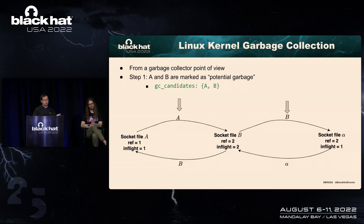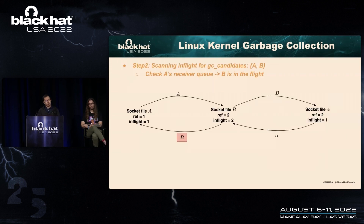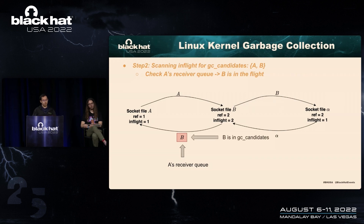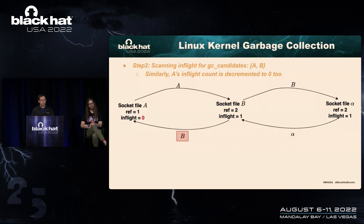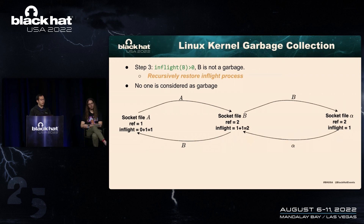From the garbage collector's perspective: first A and B are considered potential garbage and put into a global list called gc_candidates. Then the kernel scans in-flight for the GC candidates. If the kernel scans A first, it checks A's receiver queue — which is B. Because B is also in gc_candidates, the kernel decrements B's in-flight count from 2 to 1, and similarly A's in-flight count is decremented to 0. However, because B's in-flight count is still above 0, B is not considered garbage, so the kernel recursively restores in-flight counts: B's is restored to 2, A's from 0 to 1, and no one is considered garbage.